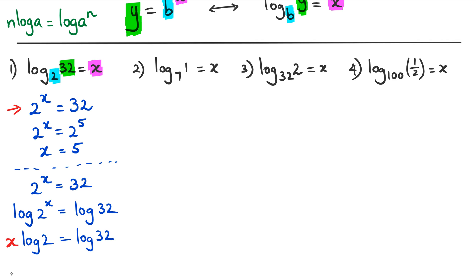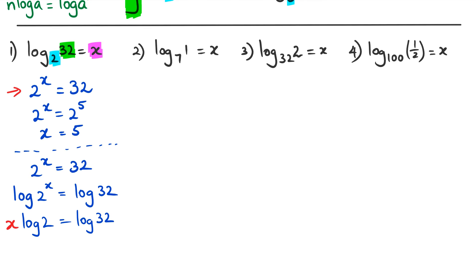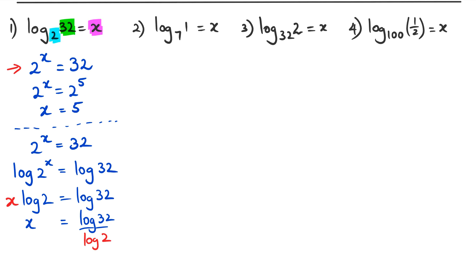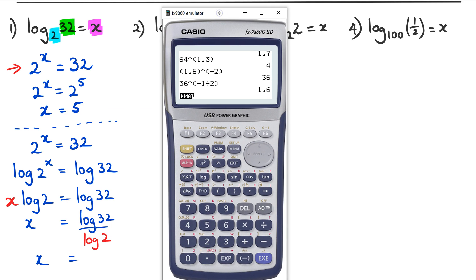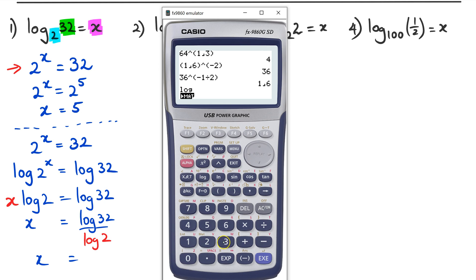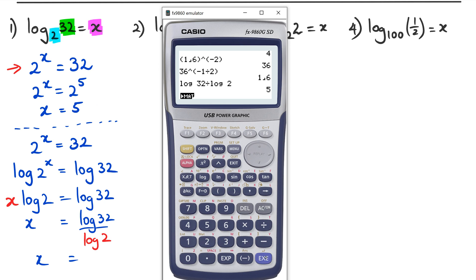So we get x·log(2) = log(32). I can treat log(2) like a number, so rearranging gives x = log(32) / log(2). Putting those values into the graphics calculator, log(32) divided by log(2) equals 5.